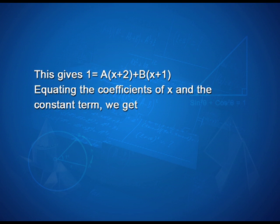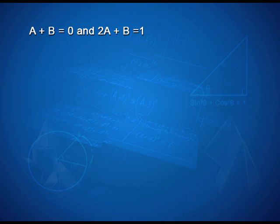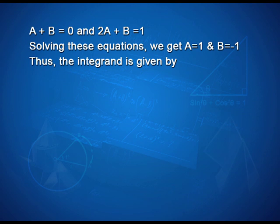This gives 1 = A(x+2) + B(x+1). Equating the coefficients of x and the constant term, we get A + B = 0 and 2A + B = 1. Solving these equations, we get A = 1 and B = -1.